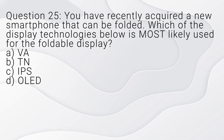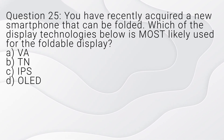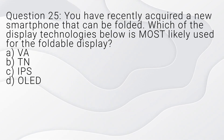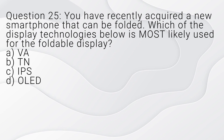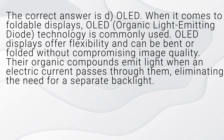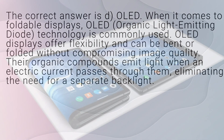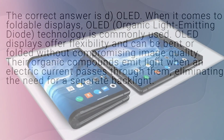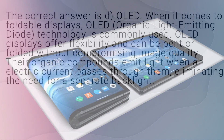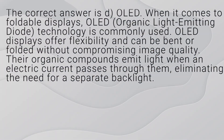Question 25. You have recently acquired a new smartphone that can be folded. Which of the display technologies below is most likely used for the foldable display? A. VA. B. TN. C. IPS. D. OLED. The correct answer is D, OLED. When it comes to foldable displays, OLED (organic light emitting diode) technology is commonly used. OLED displays offer flexibility and can be bent or folded without compromising image quality. Their organic compounds emit light when an electric current passes through them, eliminating the need for a separate backlight.